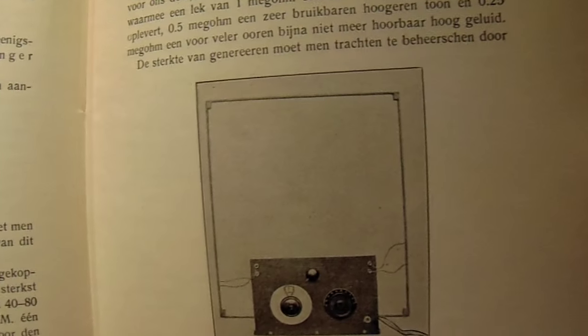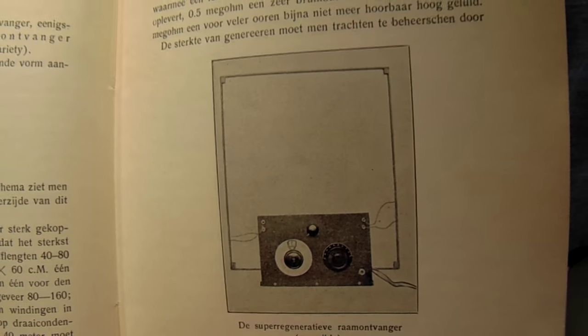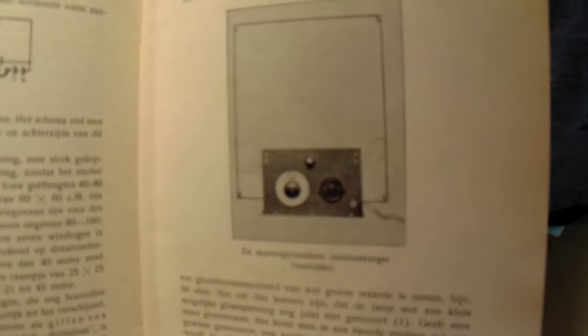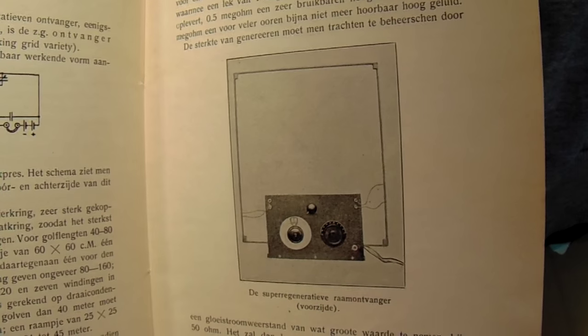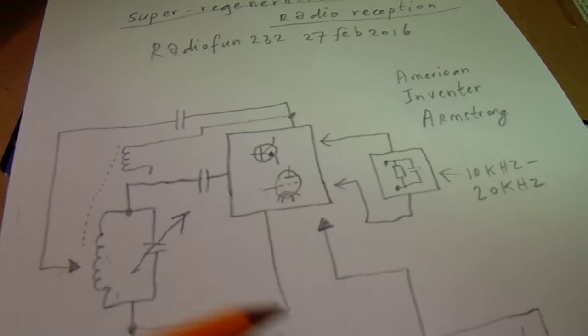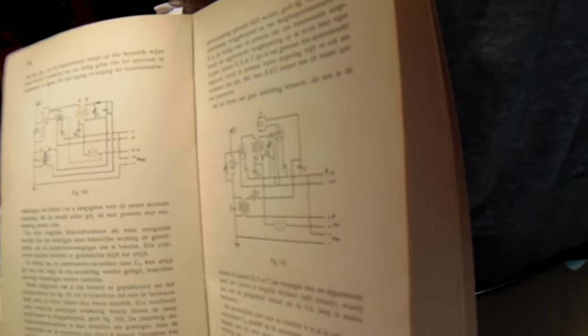Super reg is still a principle that was used up until now. Simple walkie talkies, for instance, from Chinese manufacturers now in 2016, use this super reg principle. Especially cheap walkie talkies. And it's a simple way to make a very, very sensitive radio receiver.